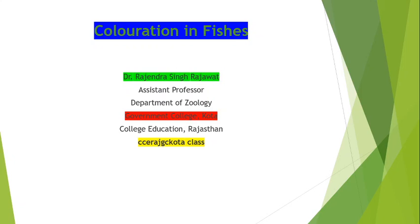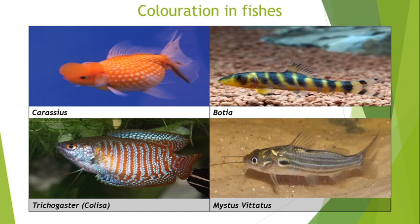In this video we will discuss about coloration in fishes. Fish may show coloration due to the presence of pigments, which is why fishes are brightly colored. Some fishes are uniformly shaded. First of all we will discuss about Carassius, which is a goldfish, which is a golden color.